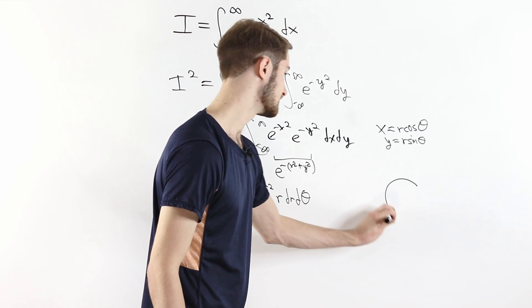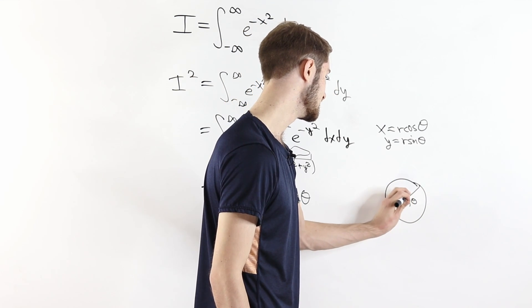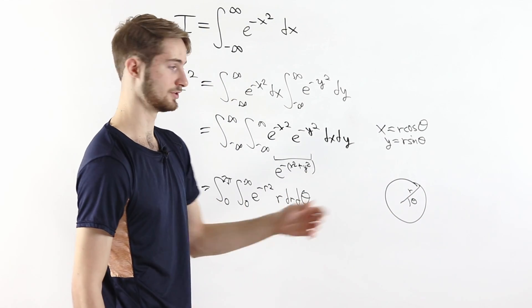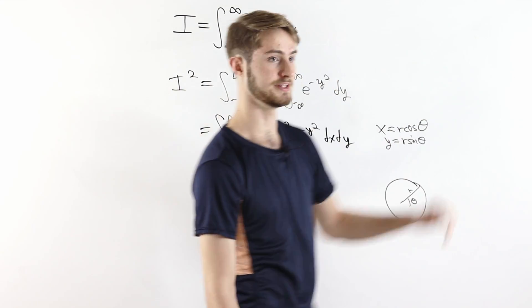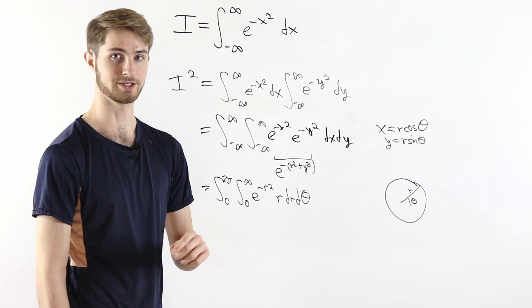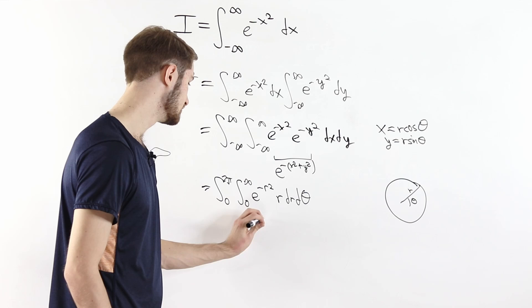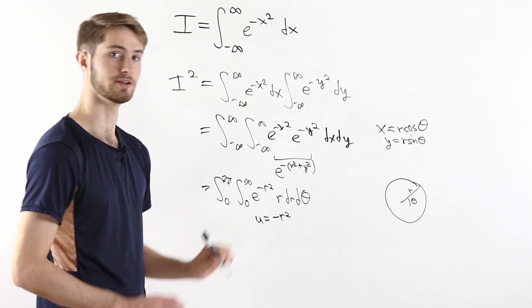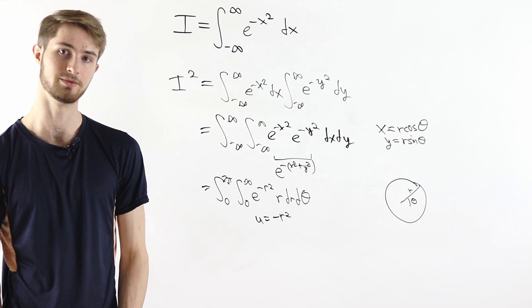In polar coordinates, r is the distance from the origin and theta is the angle. Taking theta from zero to two pi covers all directions around the circle, and r from zero to infinity covers all distances. This means we're integrating over the entire 2D space, just as we were originally. From here, the inner integral can be evaluated using the u substitution u equals minus r squared, because the r out front lets us complete the substitution and compute the integral.